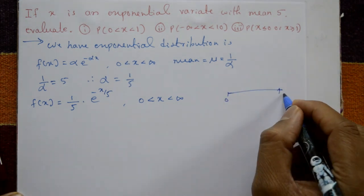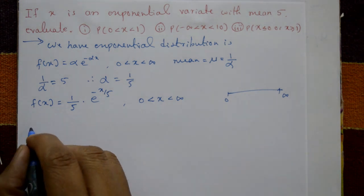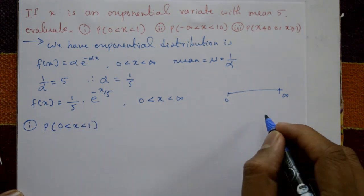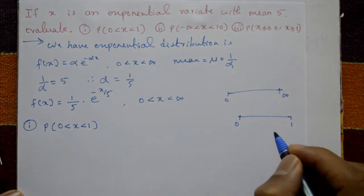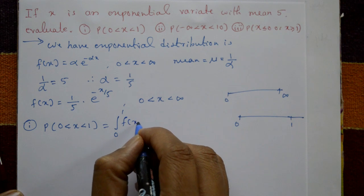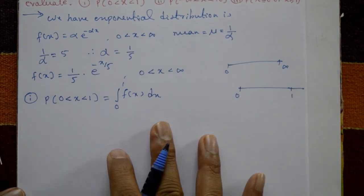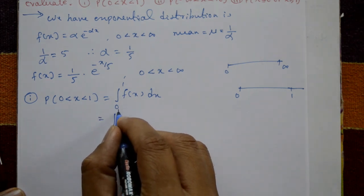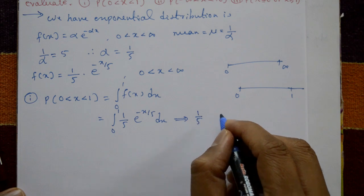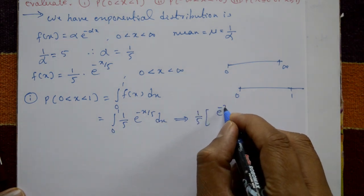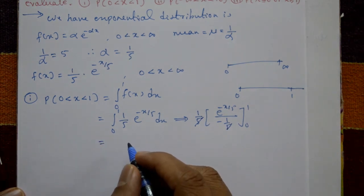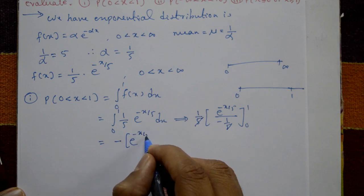Therefore f(x) equals (1/5) e raised to minus x by 5, for 0 less than x less than infinity. Now Case 1: probability of 0 less than x less than 1 means integrating f(x) from 0 to 1. This equals integration of 0 to 1 of (1/5) e raised to minus x by 5 dx. After integration we get (1/5) times e raised to minus x by 5 divided by minus 1/5, giving minus e raised to minus x by 5, evaluated from 0 to 1.